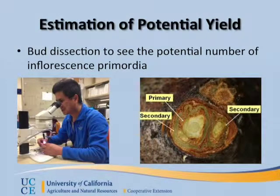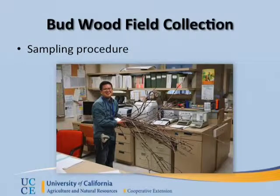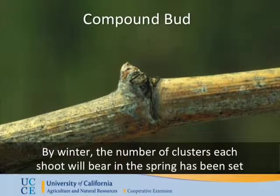The only things you need to do the bud dissection are a microscope, a very good light environment, and razor blades. You just sit there and do all the bud dissection, starting to count how many cluster primordia are inside of each node. That gives you ideas of how many clusters you're going to have for next year.